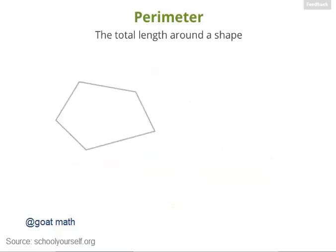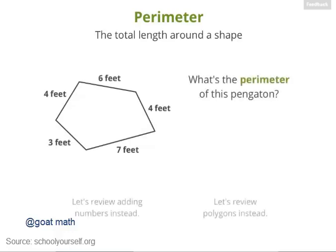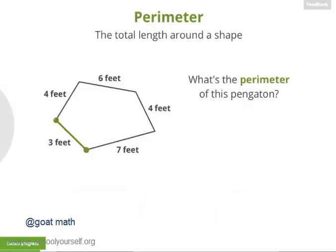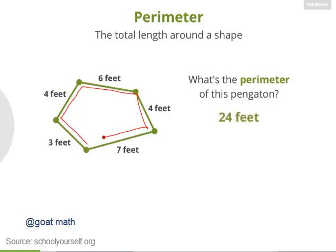Next, take a look at this pentagon, and here are all the side lengths. What's the perimeter of this pentagon? By adding up all five side lengths, you've found that the perimeter is 24 feet. So if you walked all the way around this pentagon, you'd walk a total of 24 feet.